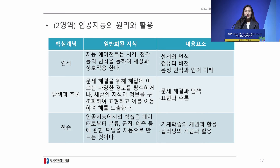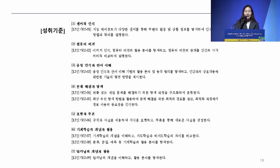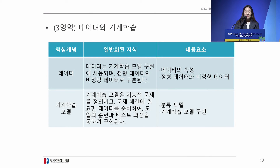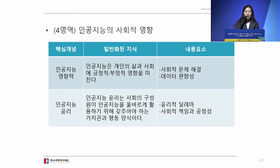Learning is one of the hottest topics, related to machine learning. The third domain includes data and machine learning. There are many things to deal with under this domain, but here students work with a machine learning model. There is a project for students to actually implement a machine learning model, and the classification model is considered one of the most appropriate models to be taught at high schools.